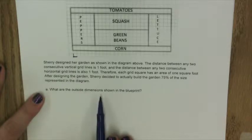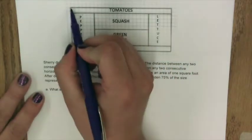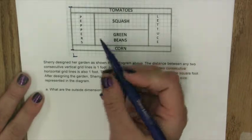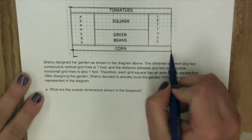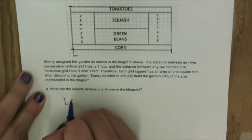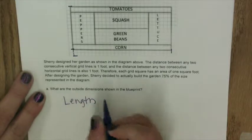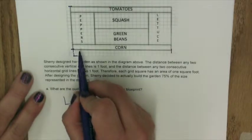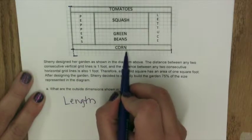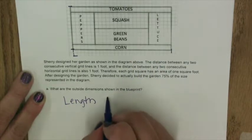Question A: what are the outside dimensions shown in the blueprint? So we're going to count what our width and our length is. Let's start with length. When we count out our length all the way across, we get that our length is 26.